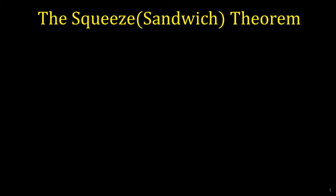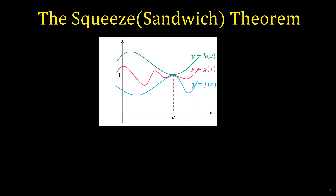In this video we want to talk about the squeeze or sandwich theorem. Suppose we have a function like g of x which is trapped between two functions like f of x and h of x, similar to this picture. The graph of g of x is trapped between f of x and h of x. If the limit of the lower function and the limit of the upper function are equal to each other at a point, then the limit of the middle function should be the same value.